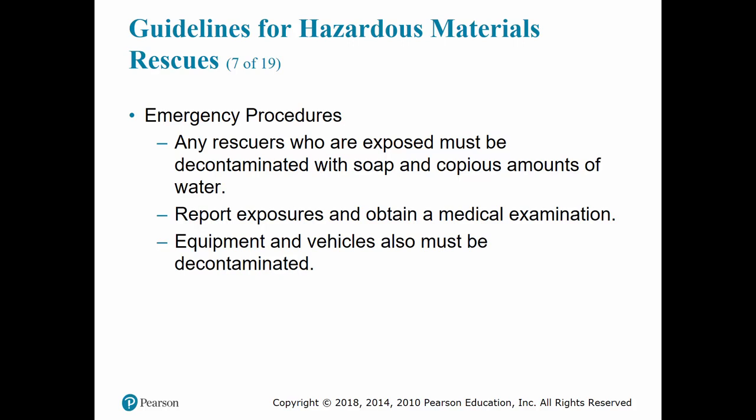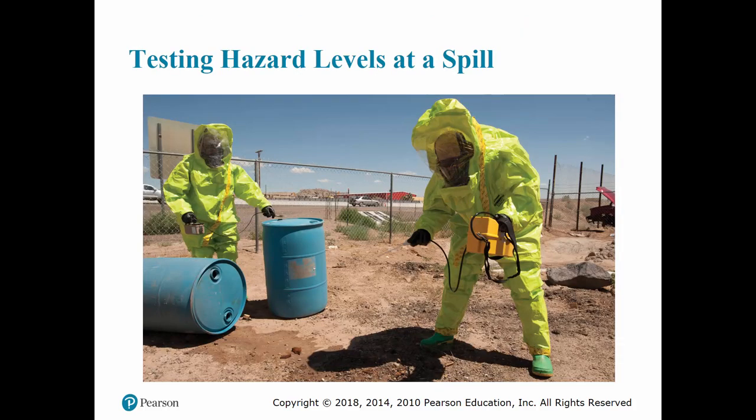Any rescuers who are exposed must be decontaminated properly. Report any exposures, and decontaminate all equipment and vehicles used. To protect your ambulance, create an isolation area using a thick plastic drop cloth to completely encapsulate the back of the ambulance, leaving only what is necessary for patient treatment. The only work done within the hot zone is hazard assessment, control of the release, and rescue by trained personnel wearing appropriate protective equipment. Personnel may test hazard levels using a Geiger meter to detect radioactive material.